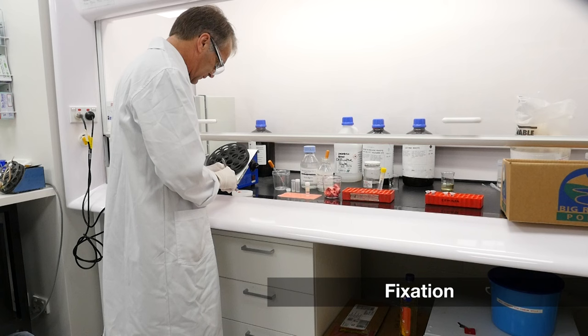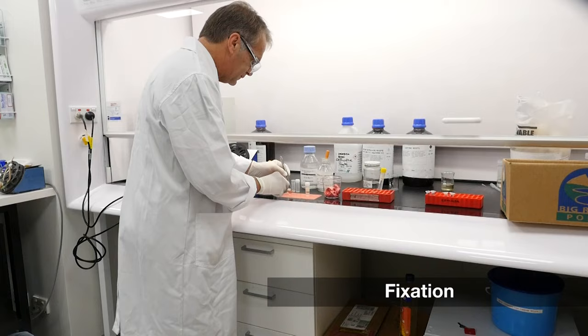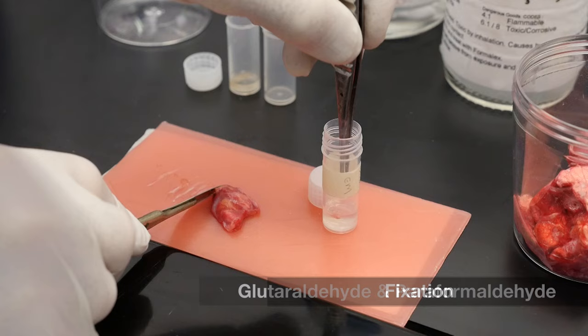Fixation is the first step in tissue preparation. It stabilizes the cellular organization. Cellular structure is best preserved if fixation occurs as close as possible to cell death. Tissue samples are cut into small pieces of about a cubic millimeter, before being immersed in a fixative solution.